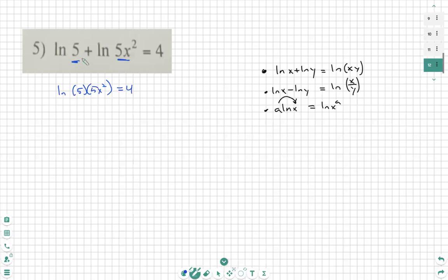That is because this ln is added to that ln. Therefore, we can multiply the arguments, the insides.